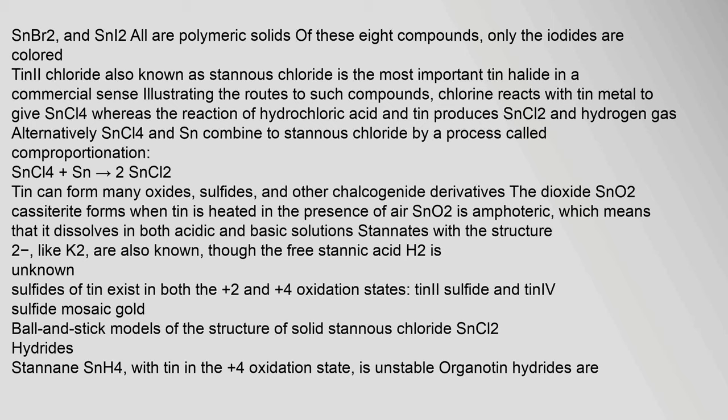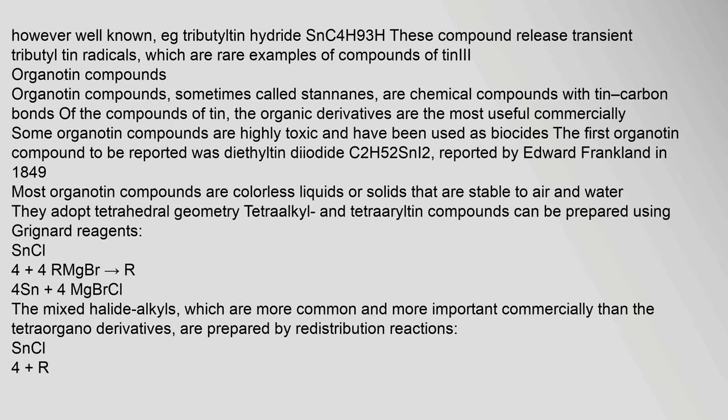Stannates with the structure [Sn(OH)6]2-, like K2[Sn(OH)6], are also known, though the free stannic acid H2SnO3 is unknown. Sulfides of tin exist in both the +2 and +4 oxidation states: stannous sulfide and stannic sulfide. Stanane (tin(4) hydride), with tin in the +4 oxidation state, is unstable, but organotin hydrides are well known, e.g. tributyltin hydride Sn(C4H9)3H. These compounds release transient tributyltin radicals, which are rare examples of compounds of Sn(III).